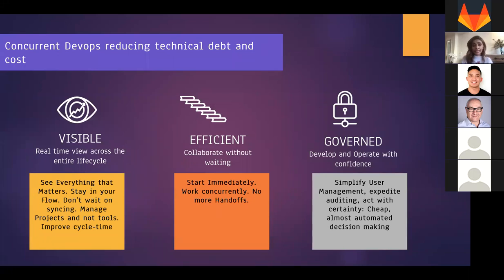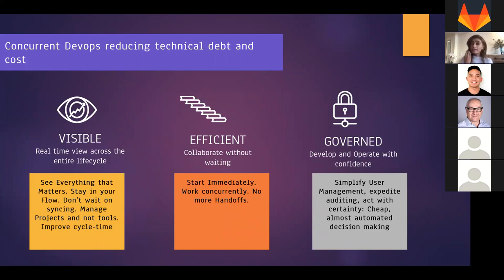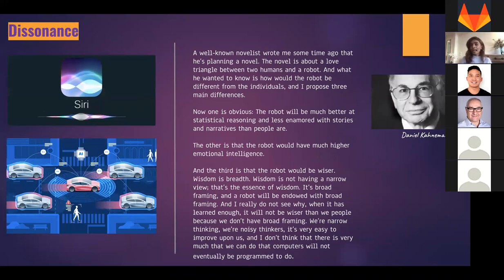All of this reduces technical debt. Concurrent DevOps is what makes it happen. There are three dimensions: it is visible - everyone knows what is happening at what stage; it is asynchronous - you can manage and improve your cycle time with no handover time so people can work immediately; and it is governed all the way through, making things simplified so you can act with certainty.